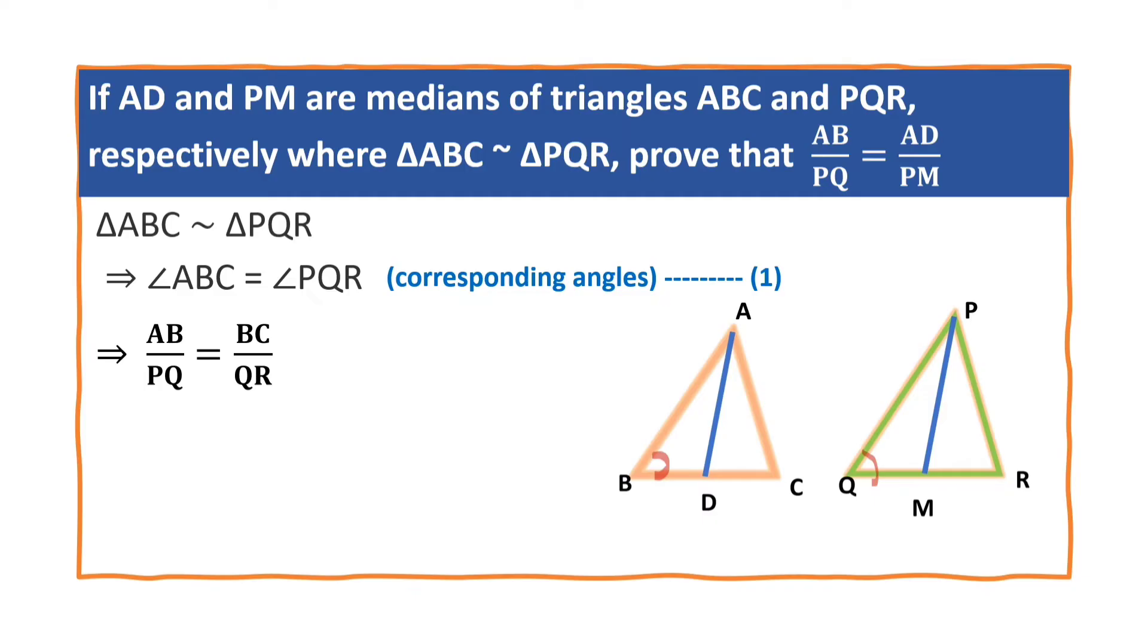It also implies that AB by PQ is equal to BC by QR. Why? They are corresponding sides. Instead of BC by QR, what is BC here? 2BD. BC is 2BD, and QR is 2QM.